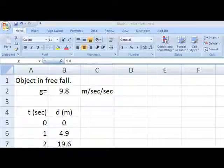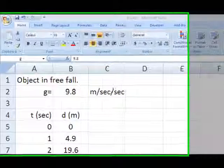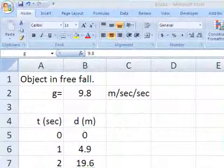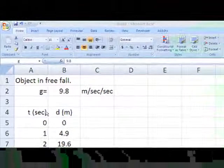Here's the spreadsheet we created earlier, showing how far an object in free fall descends for a series of different times.